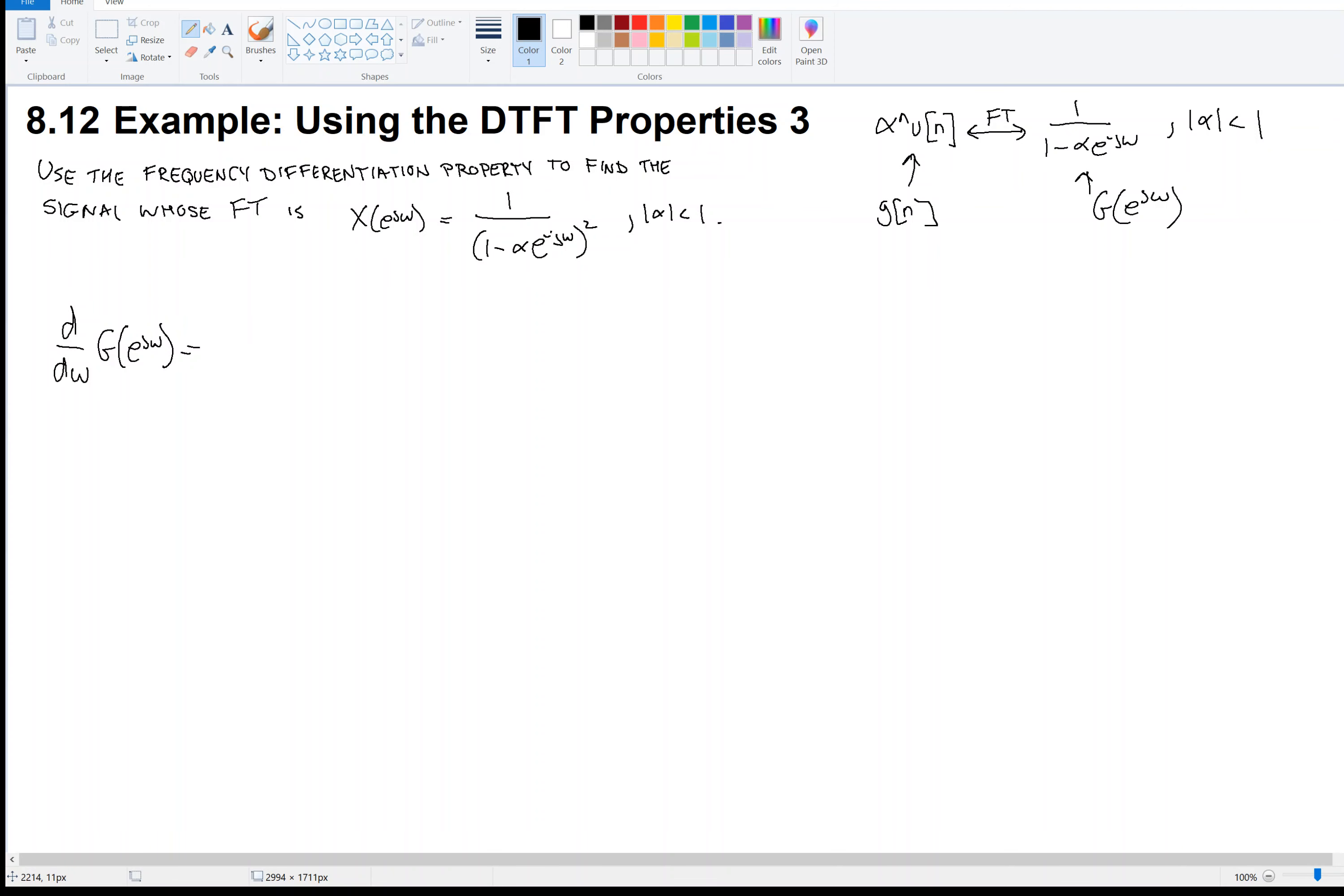Bottom times the derivative of the top is 0, minus the top 1 times the derivative of the bottom versus omega. When we take the derivative of the bottom, the minus j comes down in front, makes a plus jα·e^(-jω), all over the bottom squared. That kind of looks like this. We've got -jα·e^(-jω) over (1 - α·e^(-jω))².